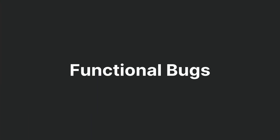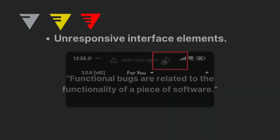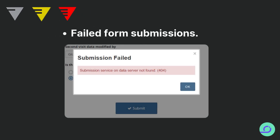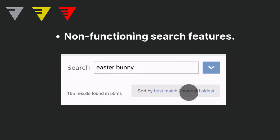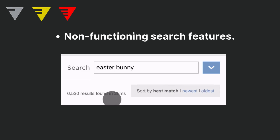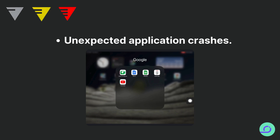Understanding functional bugs. Functional bugs are defects that directly affect how the software operates. These issues manifest in various ways including unresponsive interface elements, failed form submissions, non-functioning search features, and unexpected application crashes.